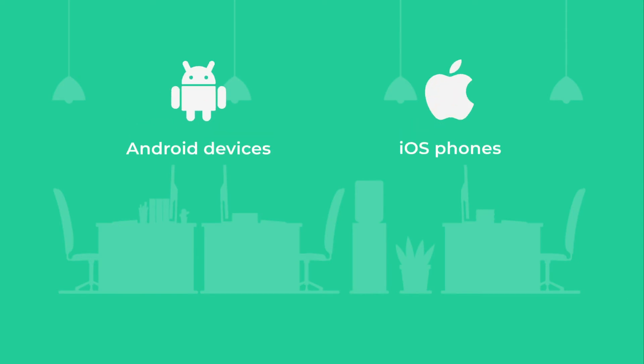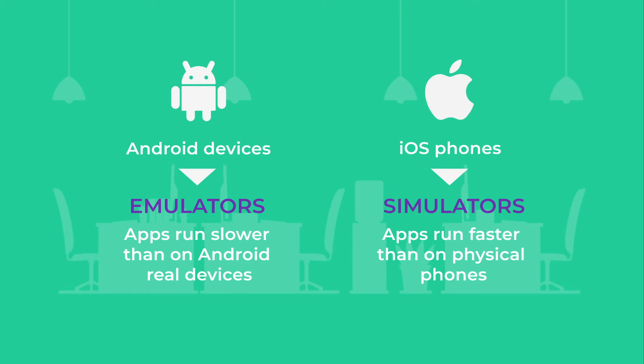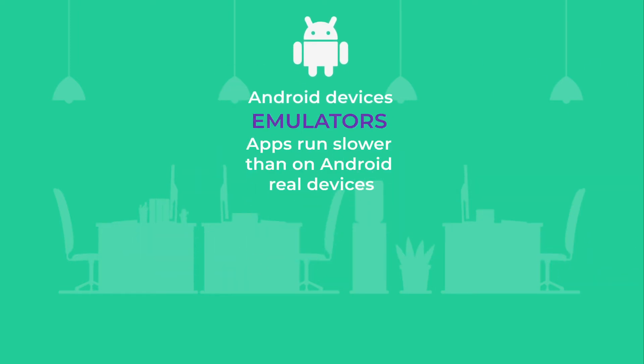It is easy to emulate Android devices and almost impossible to emulate iOS phones. As a result, QA engineers use emulators for Android and simulators for iOS. First, let's talk about emulators for Android.